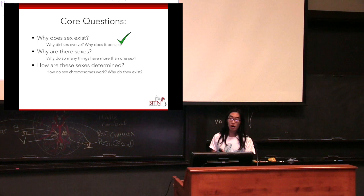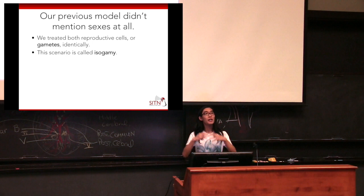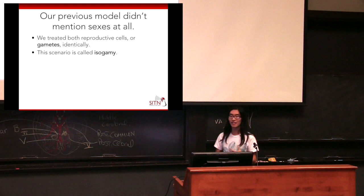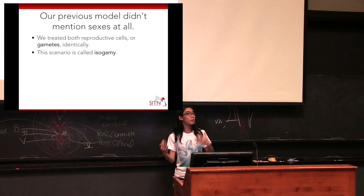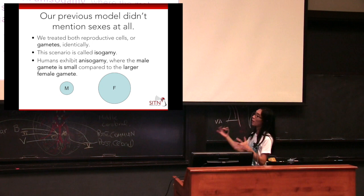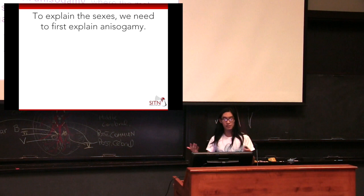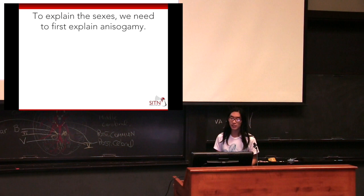Next we're going to be talking about why are there sexes? Our previous model did not mention sexes at all — I treated the reproductive cells identically. This scenario is called isogamy — iso just meaning same. This is very much not the case in humans; egg and sperm are very different. One is very large, one is very small, one is much more mobile. That scenario is called anisogamy, where the male gamete is small compared to the larger female gamete. It turns out that to explain why sexes exist, we first need to explain why anisogamy exists, and this will give us why there are sexes sort of for free.